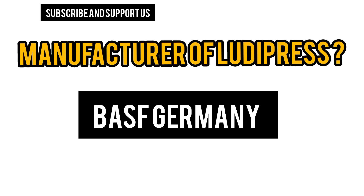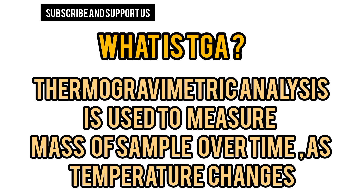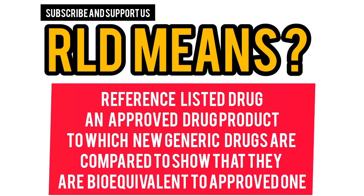What is TGA — Thermogravimetric Analysis? TGA is generally used for measuring the changes in the physical and chemical properties of a sample or material as temperature changes. It is used to measure the mass of a sample over time as temperature changes.